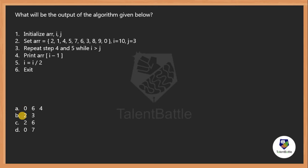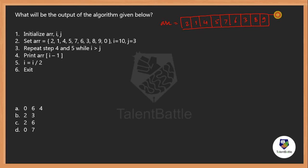Next question: what will be the output of the algorithm given below? We are given an array initialized as: arr = [2, 1, 4, 5, 7, 6, 3, 8, 9, 0] — 10 elements at indices 0 through 9. Variables are initialized: i equals 10, j equals 3. The algorithm says repeat steps 4 and 5 while i is greater than j. Currently 10 is greater than 3, so we enter the loop.